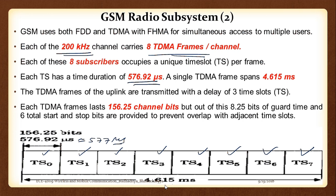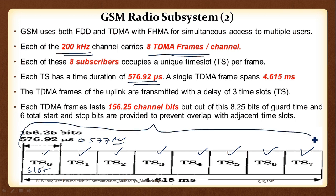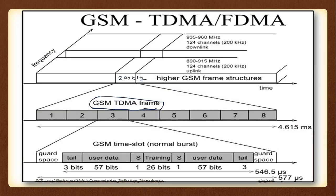The 4.615 ms frame duration and 156.25 bits per slot are fixed GSM standards. The detailed breakdown of bit types within a slot (tail bits, training sequence, flag bits) will be discussed post-CAT 2 when we cover GSM control channels. Understanding control channels is necessary to fully understand what the 'S' flag bits signify — whether a slot carries control information or voice.